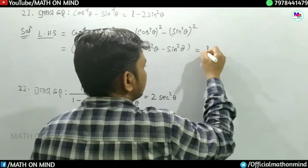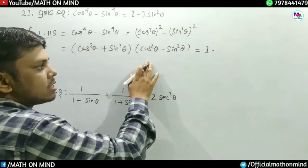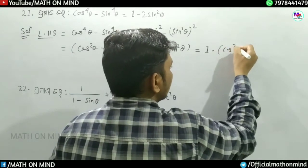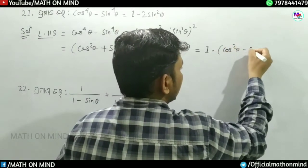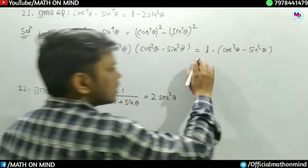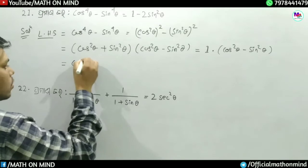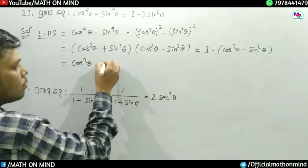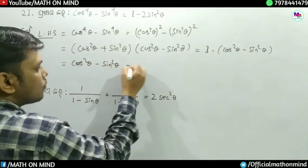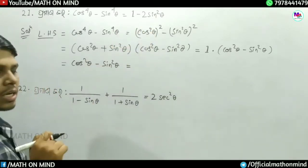Now one — you got the corner: cos squared theta minus sine squared theta, minus sine squared theta. The one multiplied — the same: cos squared theta minus sine squared theta. That gives us one minus two sine squared theta.